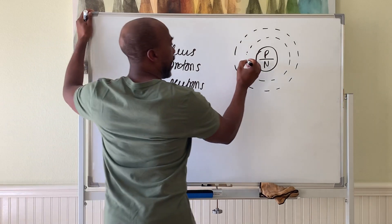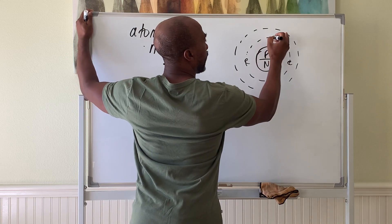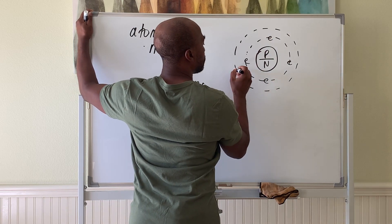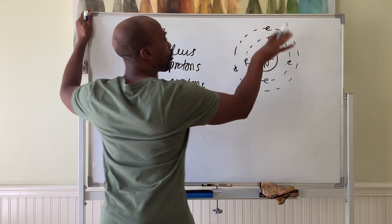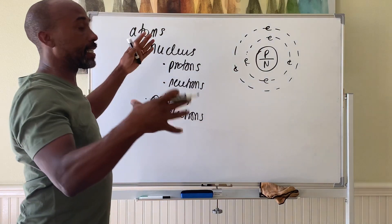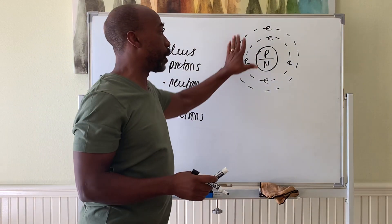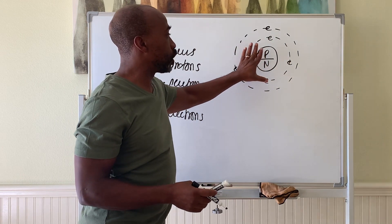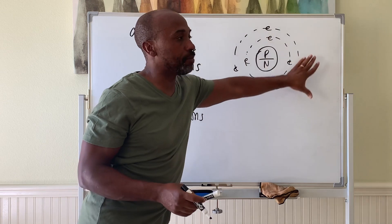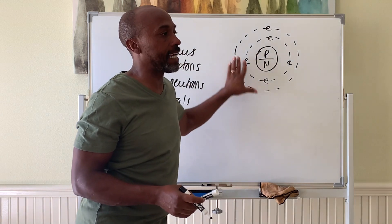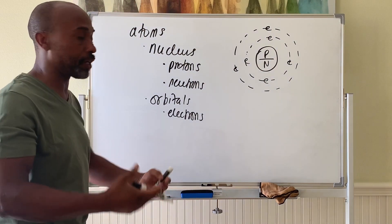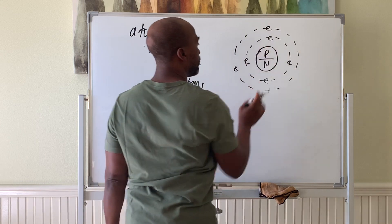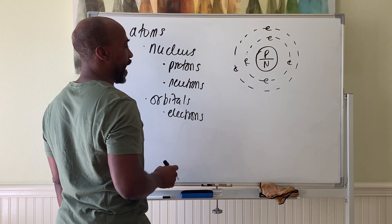The electrons are out here in the orbitals, and as you can see, most of an atom's structure and size is based on the orbitals. The nucleus is very small. It's the spread of electrons that give atoms their size, and it's also what holds them together. So electrons are in orbitals, and protons and neutrons are inside the nucleus.